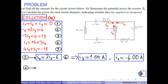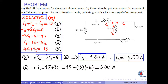From equation 4, I1 = 15 plus 3I2. With I2 = negative 4 amperes, I1 = 3 amperes. Note that the negative sign for I2 means the direction we assumed was wrong; the correct direction is its reverse, that is downward.